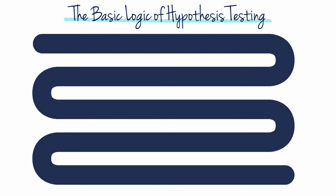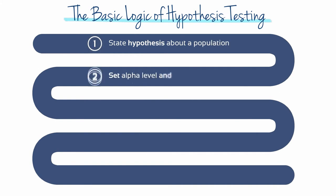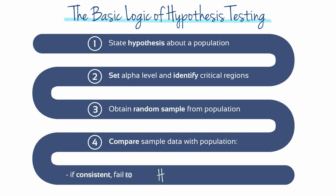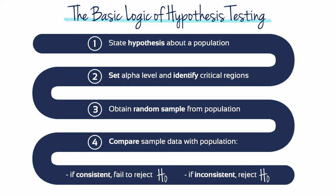Depending on the type of research and the type of data, the details of the hypothesis test change from one research situation to another. That said, a hypothesis test is a formalized procedure that follows a standard series of operations. These four basic elements are common to all hypothesis tests, giving researchers a standardized model for evaluating results that other researchers will recognize and understand.